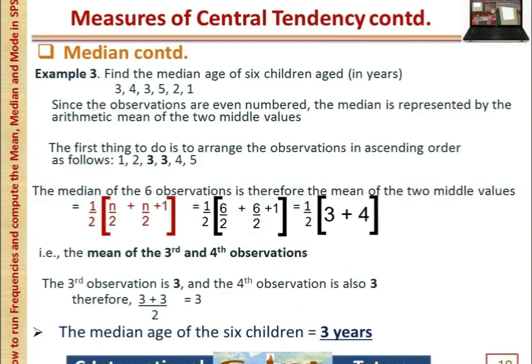Also, to find the median age of six children with the ages shown: arrange in ascending order. The median of the six observations is the mean of the two middle values — that is, the mean of the third and fourth observations, which equals 3.5 years.